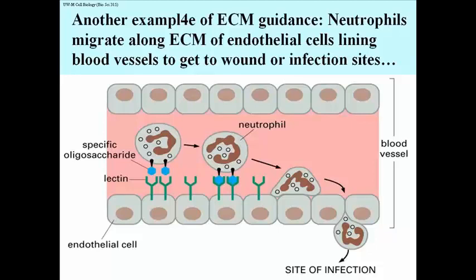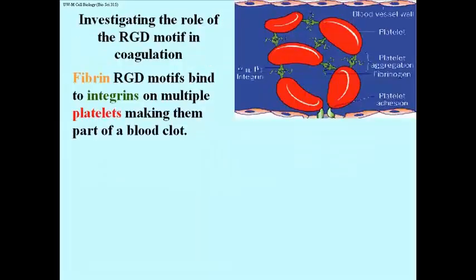Again, it's a kind of migration. It involves the neutrophils moving along the basal lamina or ECM of endothelial cells. Let's take another look at a role of RGD motifs in blood coagulation. What you see in the picture are platelets. During blood clotting, they are aggregated by molecules of fibrinogen or fibrin, and they form a meshwork of structure along with the fibrin itself, which produces a clot—essentially a blockage of blood flow through the vessel.